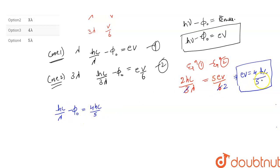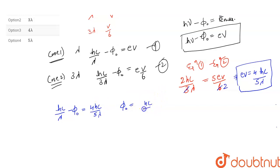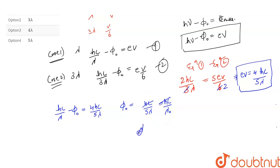Here lambda becomes 4hc by 5 lambda, so that's 4 by 5 lambda. Therefore phi naught equals hc by lambda minus 4hc by 5 lambda, which gives hc by 5 lambda. And since phi naught equals hc by lambda naught, hc cancels and lambda naught equals 5 lambda.